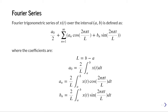Let's talk about how we can generate Fourier series for periodic signals using Python. This is the definition of Fourier series for a signal xt defined over the interval a to b, and we are going to assume that the Fourier series for this signal actually exists.